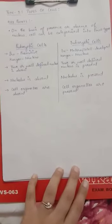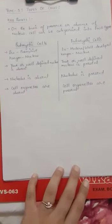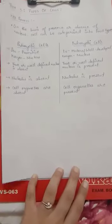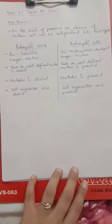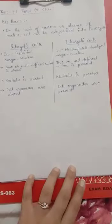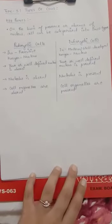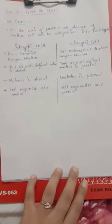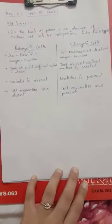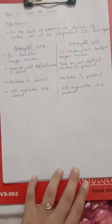In the case of prokaryotic cells, the nucleus is not well-defined, while in the case of eukaryotic cells, the nucleus is well-defined. The nucleolus is also not present in prokaryotic cells, while in eukaryotic cells, the nucleolus is present.